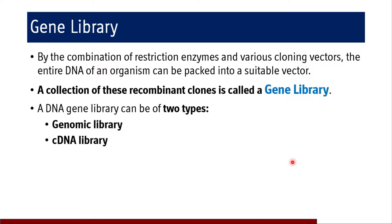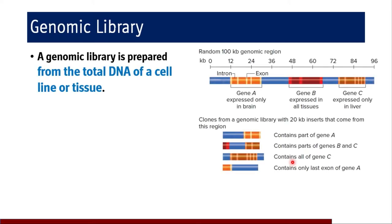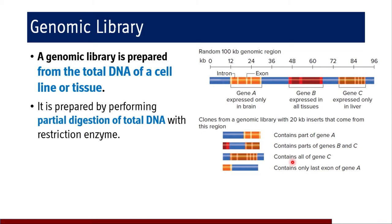A genomic library is prepared from the total DNA of a cell line or tissue. Each cell line has differentiated features — bone cells, marrow cells, and skin cells are all different because certain genes are expressed in each particular cell line, producing different proteins and morphological features. The total DNA of a particular cell line or tissue constitutes a genomic library, and it is prepared by performing partial digestion of total DNA with restriction enzymes.